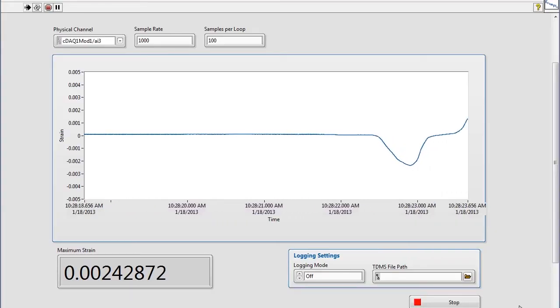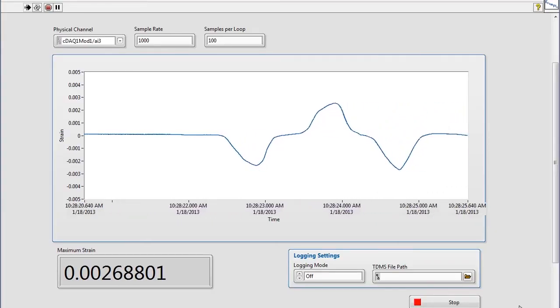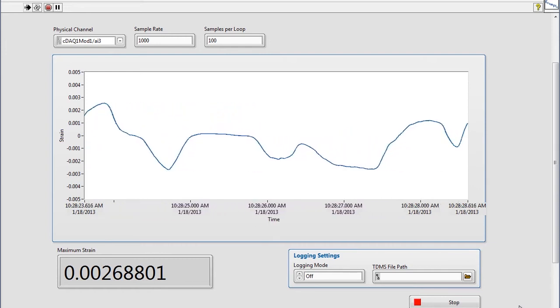Now, here on the demo before you, we're taking some strain measurements from a strain gauge connected to a small piece of metal. And as you can see, we're continuously acquiring this measurement. As I flex the bar, you can actually see the measurement going up and down on the graph.